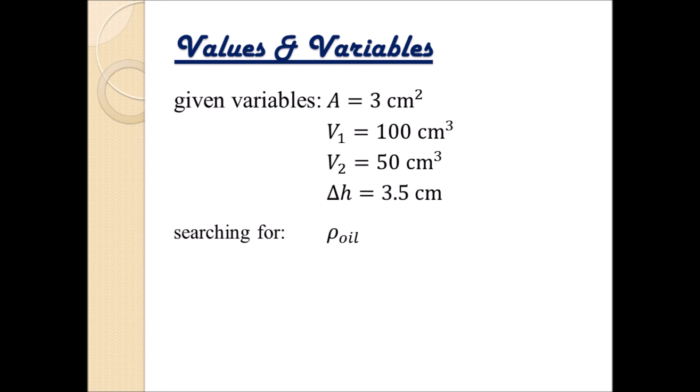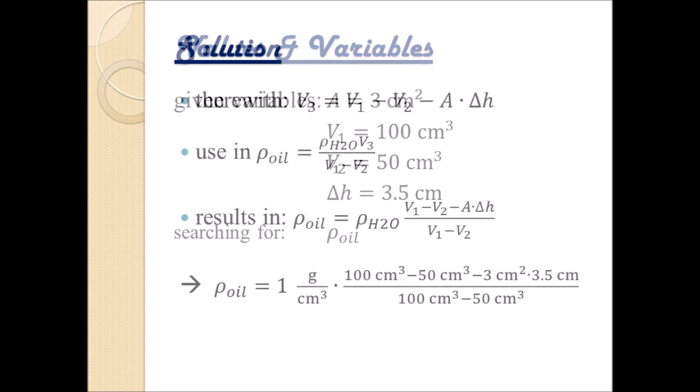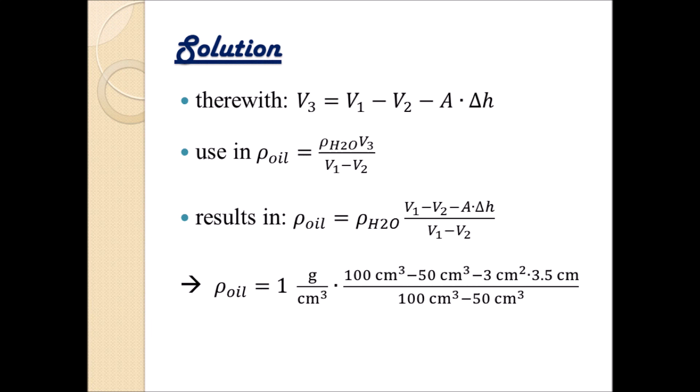Because if we go back to our solution, we see here that if we put all values, including the units, into the equation, we notice that on the right-hand side, centimeters cubed is really deleting itself. And all that's left of units on the right-hand side is actually gram per centimeters cubed, the perfect unit for a density.